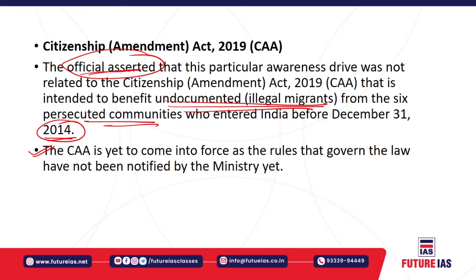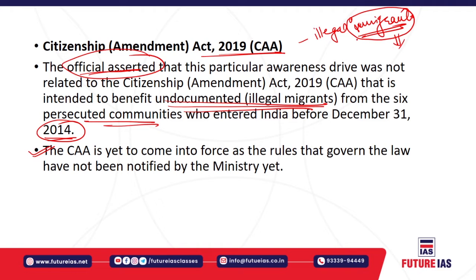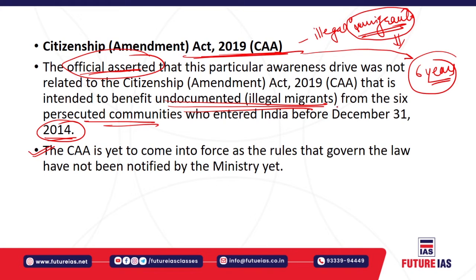The Citizenship Amendment Act 2019 basically amends the definition of illegal migrants. Those illegal immigrants — Hindus, Sikhs, Parsis, Christians, Jains, Buddhists — came from Pakistan, Afghanistan, and Bangladesh and are staying in India with or without documents. If they came with documents such as long-term visas and continued to stay, they will be granted fast-track Indian citizenship in just six years, compared to the standard 12-year requirement under the Citizenship Act 1955.